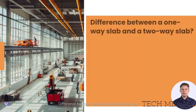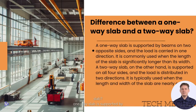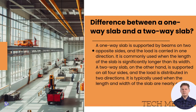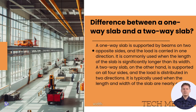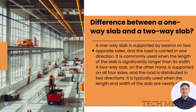What is the difference between a one-way slab and a two-way slab? A one-way slab is supported by beams on two opposite sides, and the load is carried in one direction. It is commonly used when the length of the slab is significantly longer than its width. A two-way slab, on the other hand, is supported on all four sides, and the load is distributed in two directions.